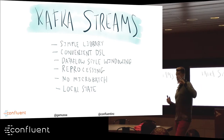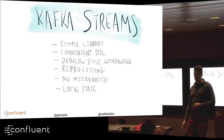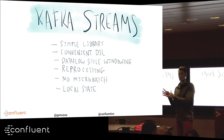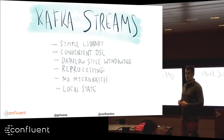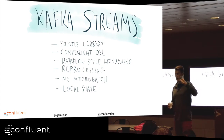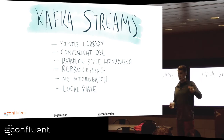Kafka Streams is part of Apache Kafka — it's a Java library, not a cluster system. It's not distributed computation like Spark, Storm, or Flink. It's very lightweight — you can deploy it in a traditional way, as a WAR file or fat JAR. And it's actual real streaming — not micro-batch — it processes per event, per message, rather than accumulating data and running a batch job on top.